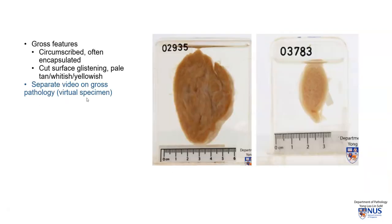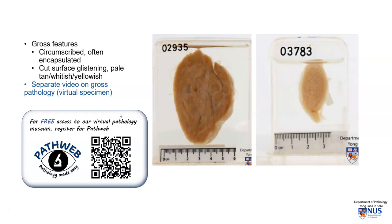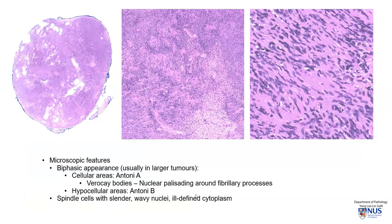There is a separate video describing the gross features of schwannoma with a demonstration of a virtual pathology specimen. Schwannomas are usually well-circumscribed, and we saw the capsule in our example earlier. These virtual pathology specimens are taken from the free online pathology resource PathWeb — you can scan the QR code to register, or use the link in the video description. Microscopically, we see the biphasic appearance with paler, less cellular and bluer, more cellular areas. This is usually more apparent in larger tumors and may not be appreciated in small tumors.